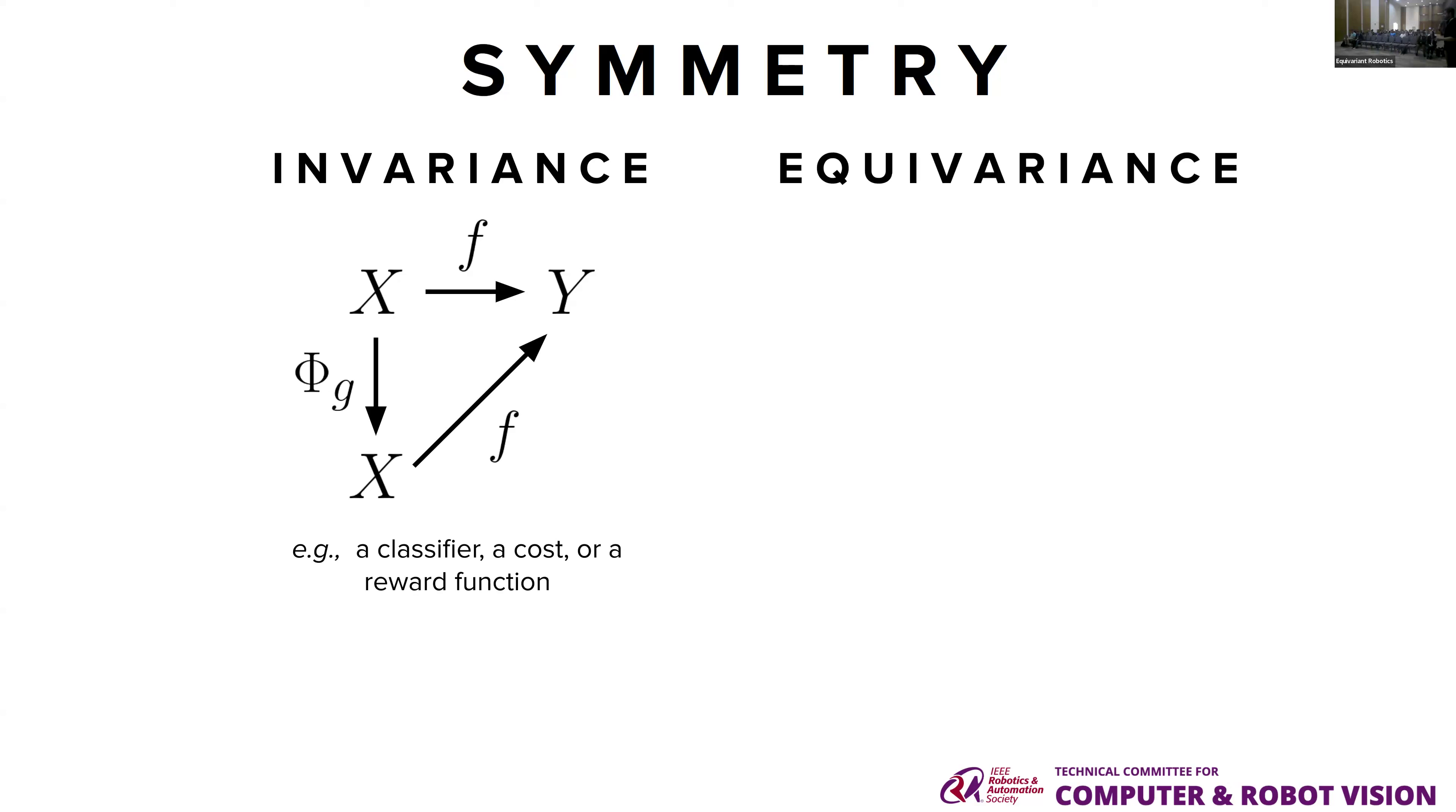The other flavor is equivariance, where that function, after we apply our transformation, we might look at exactly the same result as we did before, but that result might be related by transformation of the output space by the same or by some related transformation.